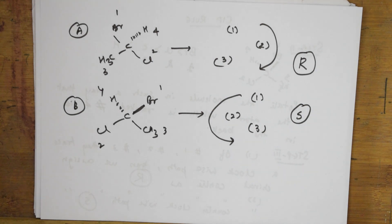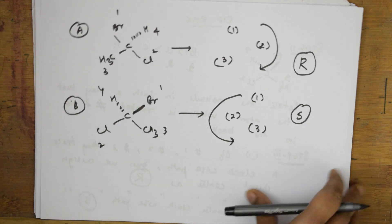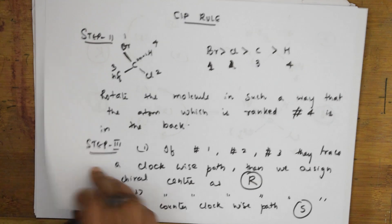Now let us take one more example which will explain what happens when we have more than one chiral center. Step one is done, step two is done, step three is done.